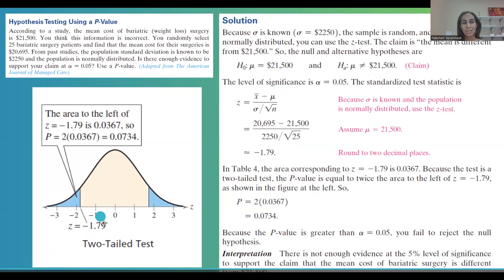Negative 1.79 is z squared on the left hand side. The area to the left is 0.0367 multiplied by 2 to get the total area on the left and the right hand side. So p-value is 2 times this little area which is 0.0734.